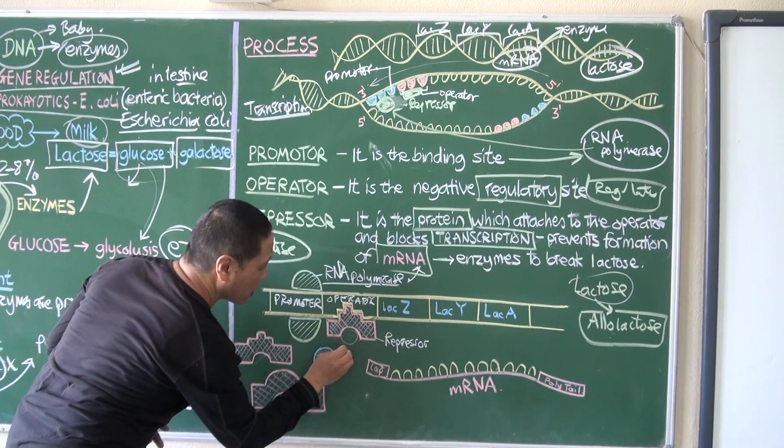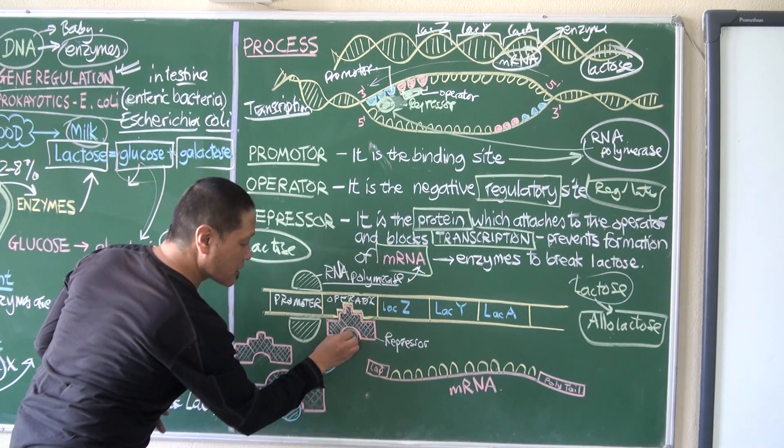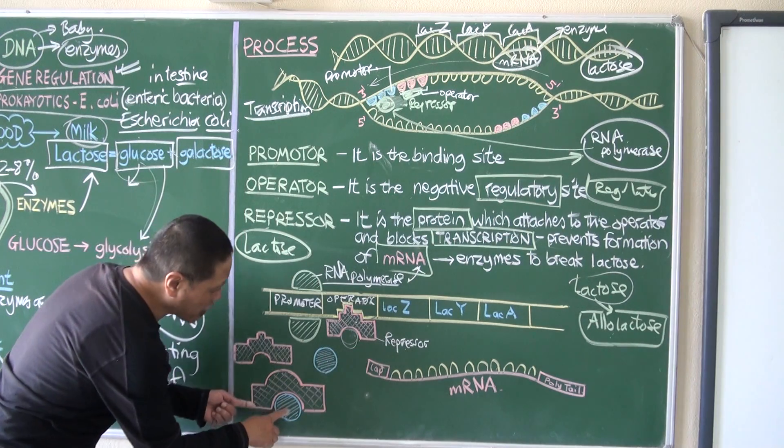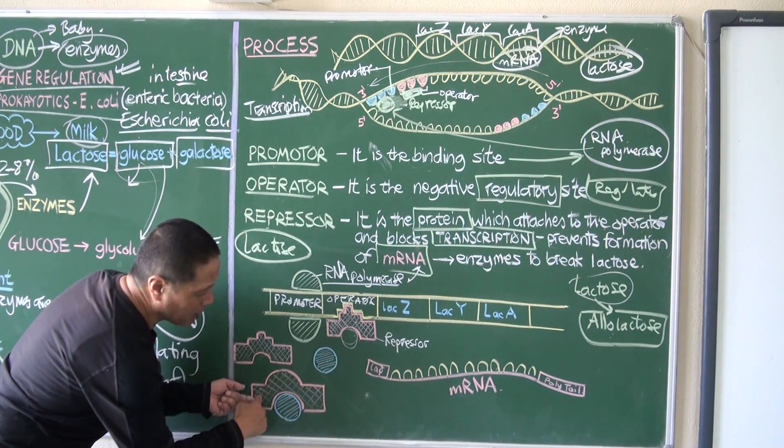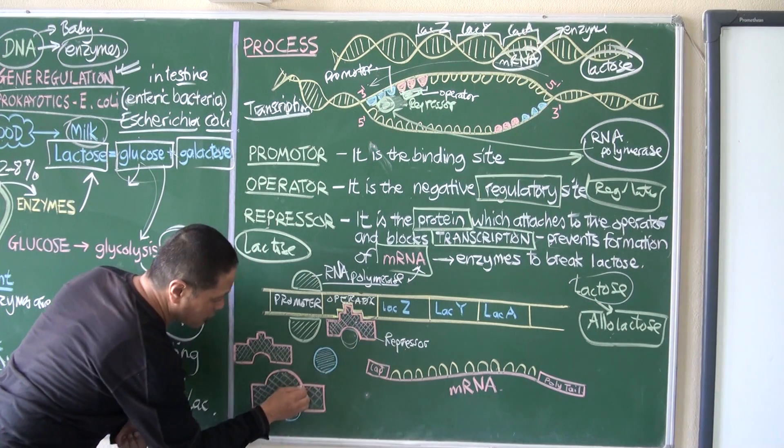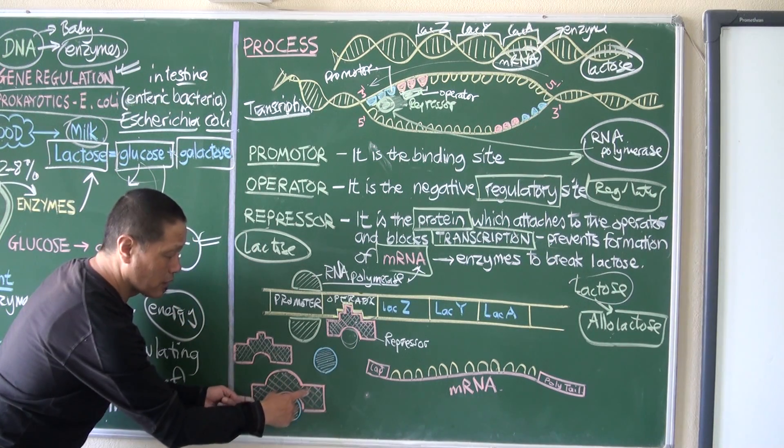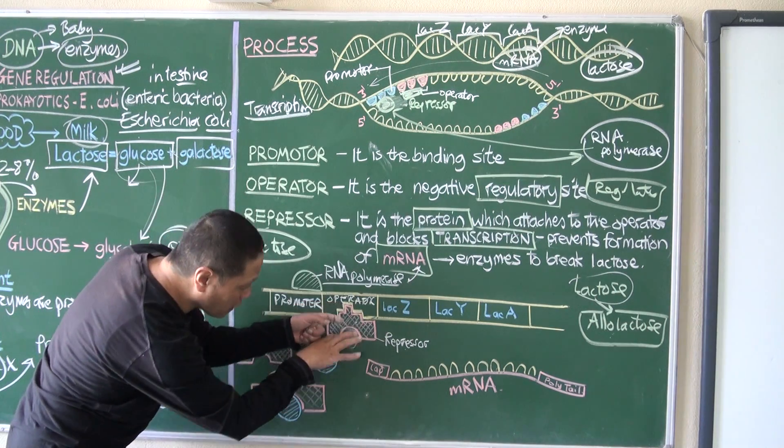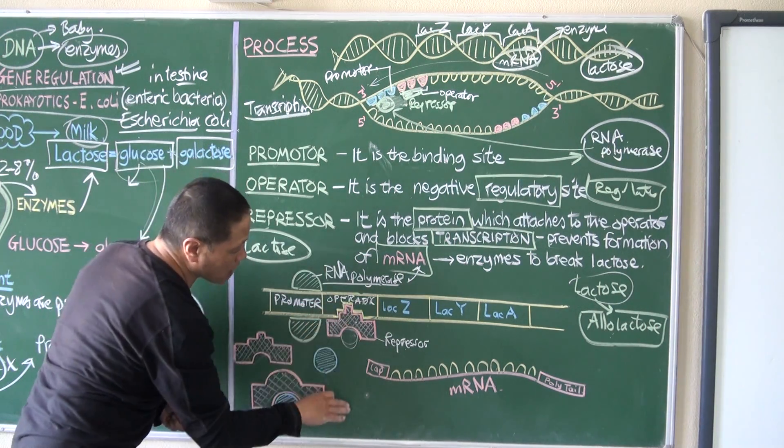It changes the shape of the repressor. It has this kind of shape, now suddenly it is like this. So this shape does not fit to be on the operator and it comes out. When it comes out,